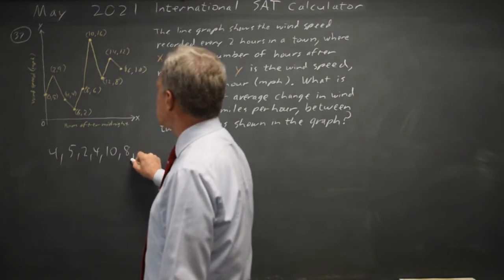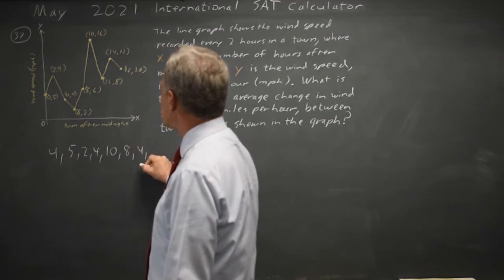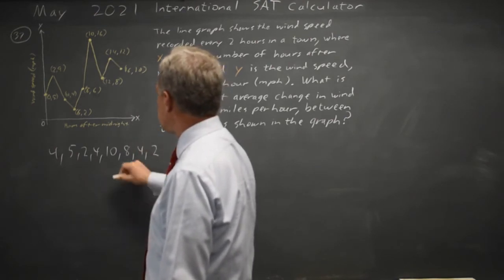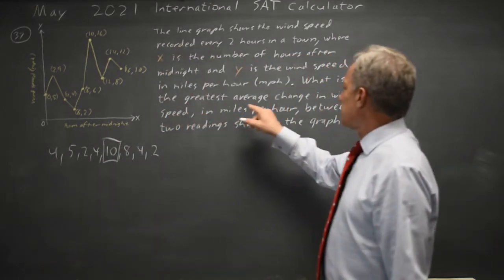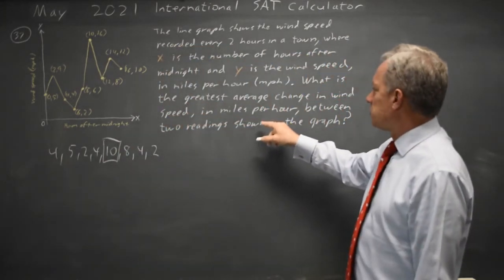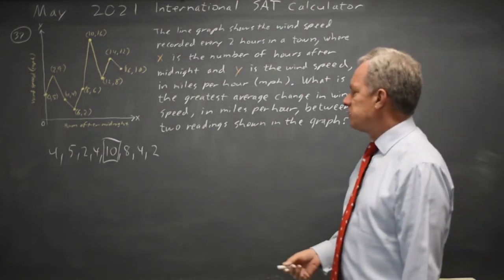16 to 8 we change by 8. 8 to 12 we change by 4. And 12 to 10 we change by 2. The greatest average change in wind speed between two readings shown in the graph is 10.